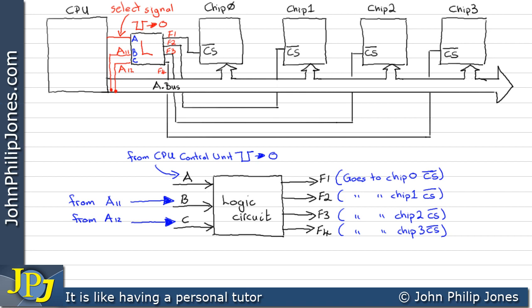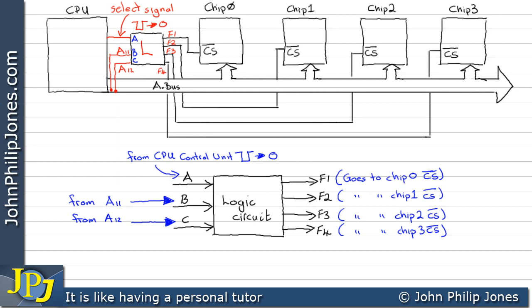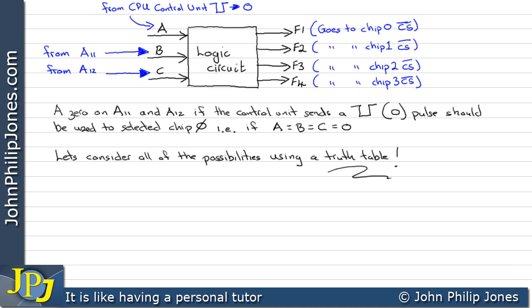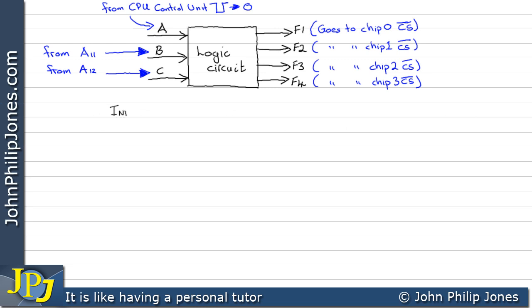In combination, the pulse and the two address lines are responsible for selecting a memory chip. Depending on the combinations on A11 and A12 dictates which chip is selected, but nothing gets selected unless input A has a low pulse from the control unit. For example, a 0 on A11 and A12 with a low pulse should select chip 0 — i.e. if all inputs are 0. Let's consider all possibilities using the truth table. The truth table has inputs A, B, and C, and outputs F1, F2, F3, and F4.